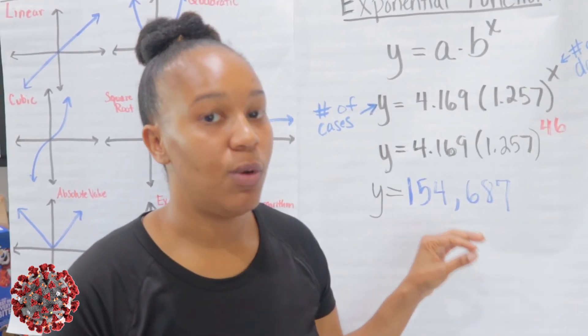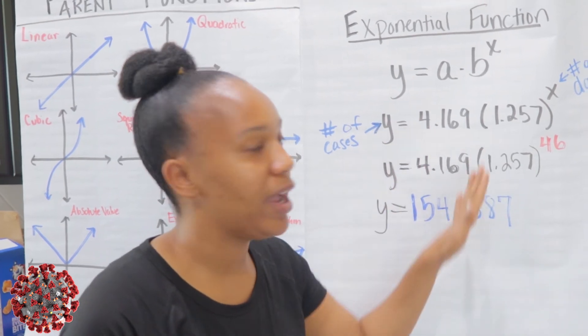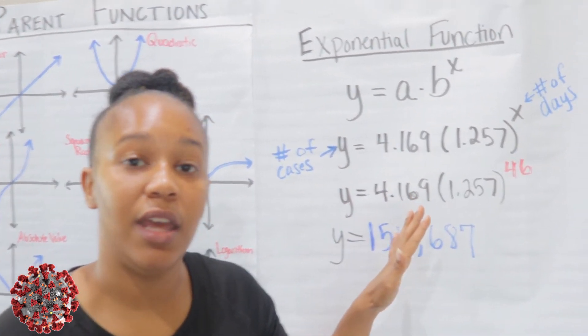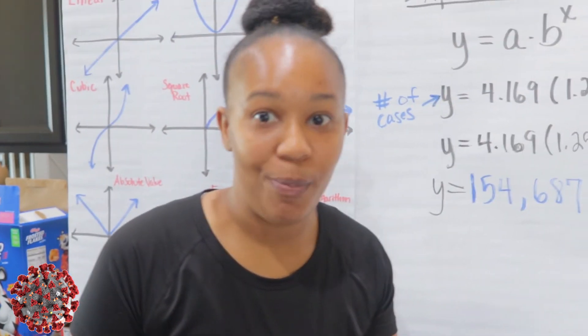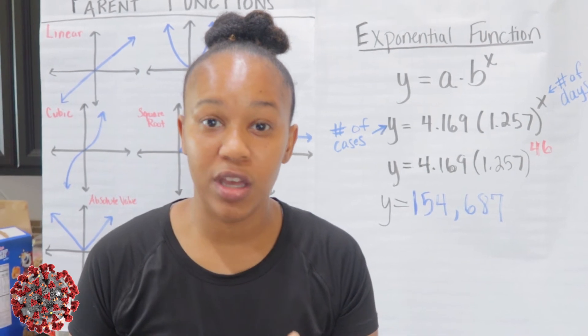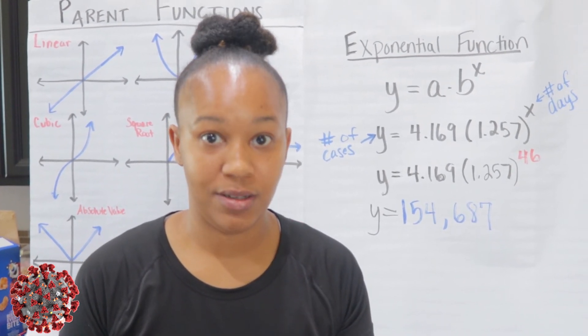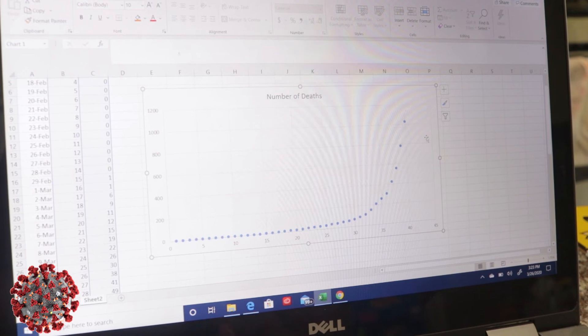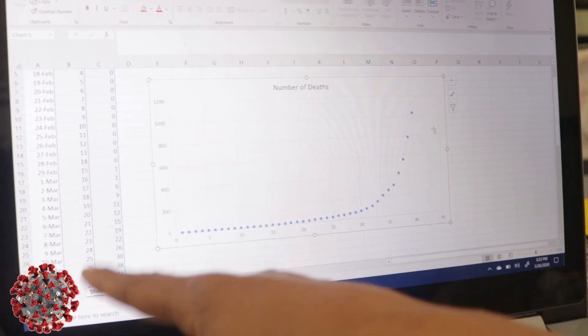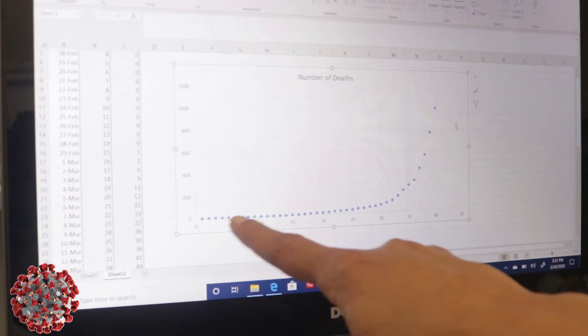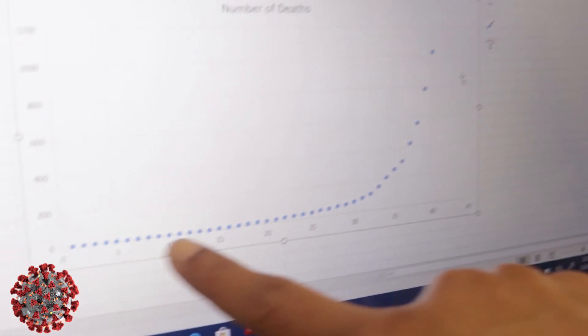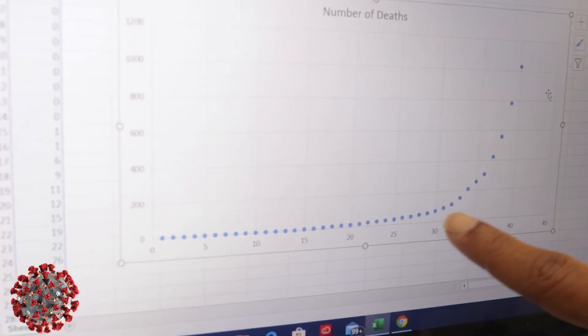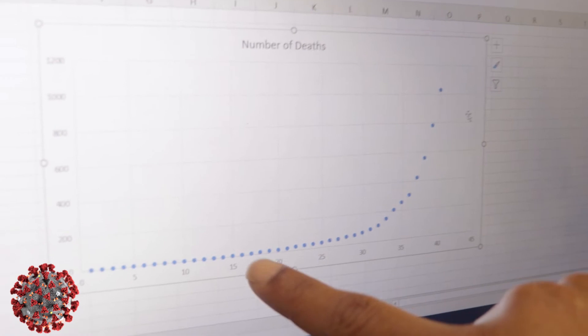Now, the thing that we also want to model, because these are the numbers, or this is the way government is looking at models to make decisions about whether we should shut down or whether we should stay open, but the number we really were really interested in is the number of deaths. Okay, so I'm taking you back to my Excel spreadsheet. This time I have the number of days versus the number of deaths. And as you can see, the number of deaths each day is also growing. So there were no deaths for a long time, and then around day 20 we started to see people dying.